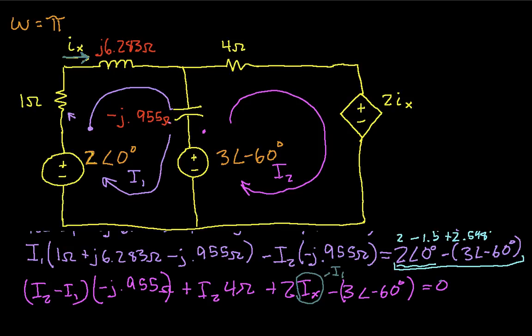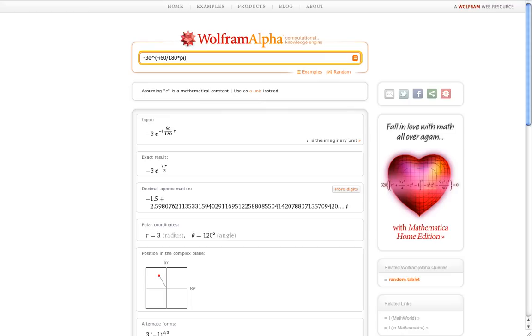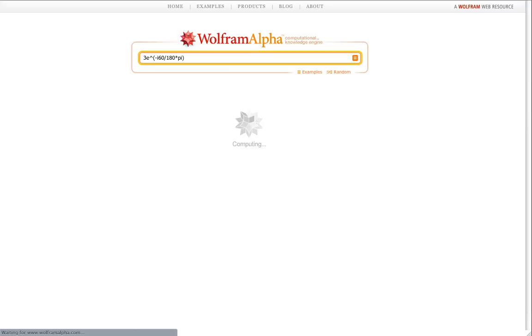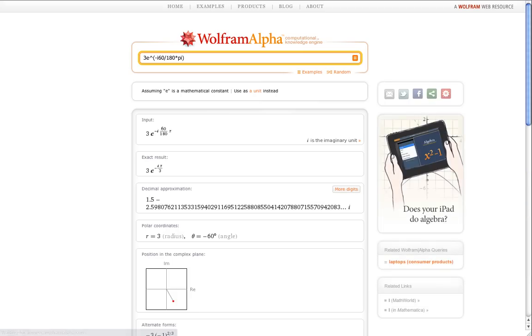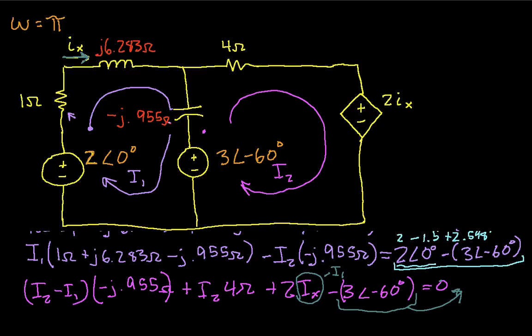If we take this 3 at an angle of negative 60 and move it to the opposite side, then we'd want to replace it by its rectangular value because that'll make our life easier. So we go back to Wolfram Alpha, and we're actually pretty close to computing this. We just have 3 rather than negative 3 to the negative 60. And it ends up being 1.5 minus 2.598j. So we go back and we'll write that down. This becomes 1.5 minus j 2.598.